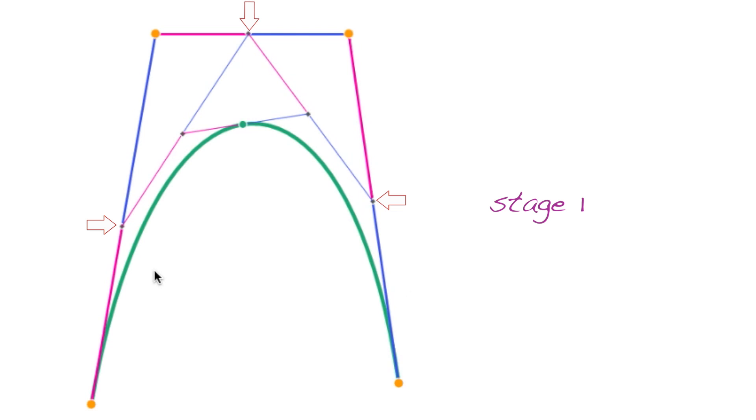In the first stage, I compute three points using linear interpolation. In the second stage, I compute two points, and in the third stage, I compute one point. Since I have three stages, the resulting curve will be degree 3. That means a four-point polygon results in a degree 3 curve.